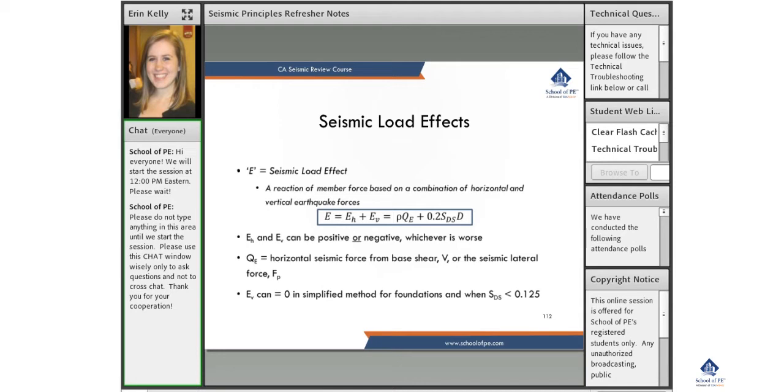So what that means is translated into engineering terms below is that E equals the horizontal component of the earthquake load effect and the vertical component of the earthquake load effect.